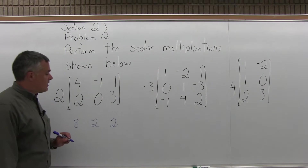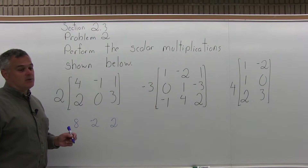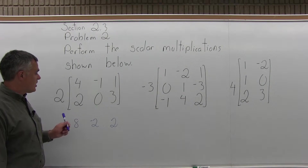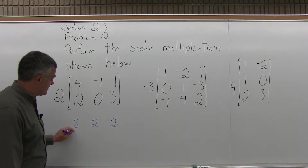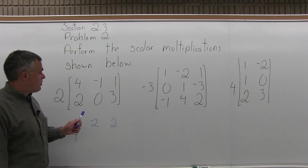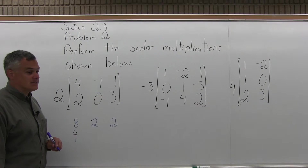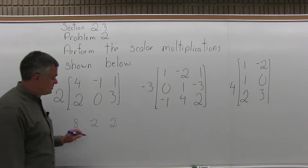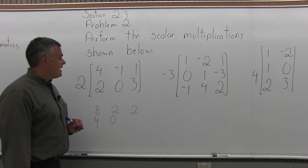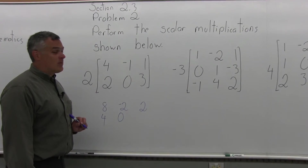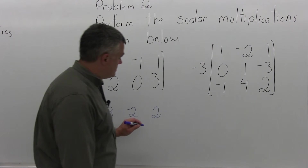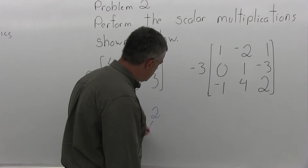Then the bottom row — every number gets multiplied times 2. On the bottom left there's a 2, so it becomes 2 times 2, which is 4. In the bottom middle there's a 0, so 2 times 0 stays as 0. And then in the bottom right you have 2 times 3, so that becomes 6.